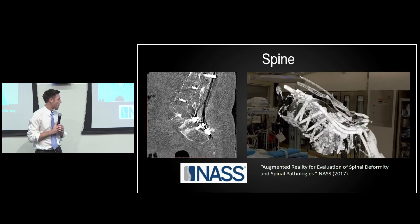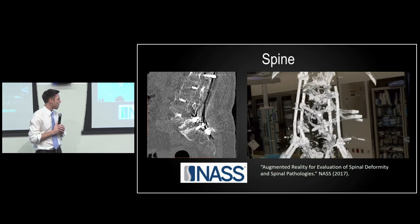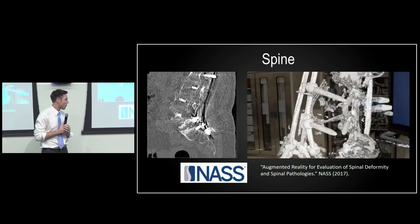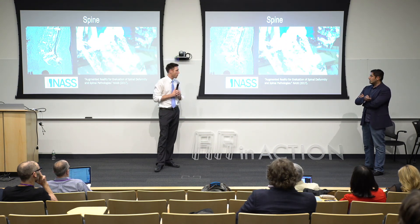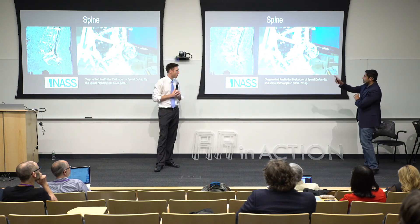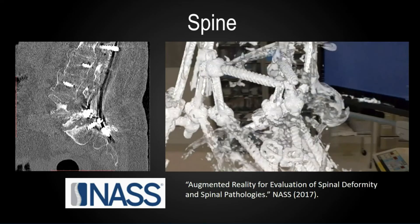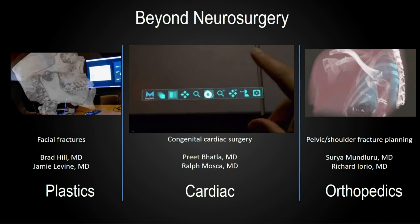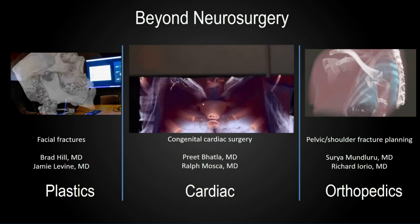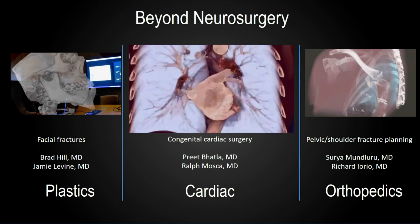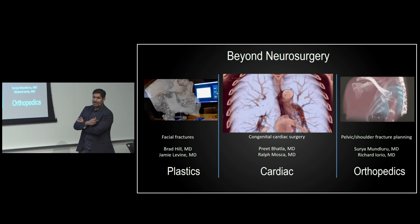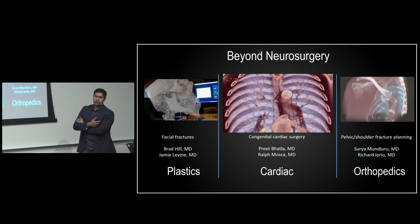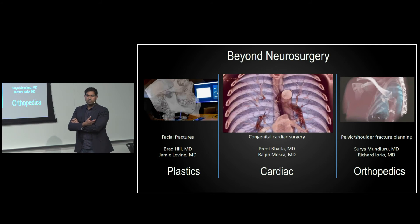Another use case is spinal surgery, where there's often a lot of hardware placed. To be able to look at that dynamically makes sense, because it is a three-dimensional intervention — why not understand it in that manner? Here you can see the screws placed in this patient and even grafts placed in a very intricate manner. Beyond neurosurgery, all fields of medicine can utilize this visualization, including plastic surgery with bony reconstruction, and congenital cardiac surgery, which makes heavy use of 3D printing right now. But with 3D printing you're waiting days for models, and often these are emergency cases where you need the information right there and then.